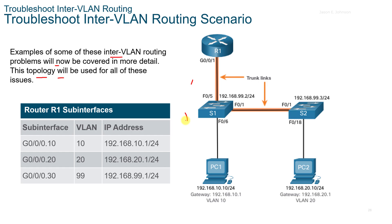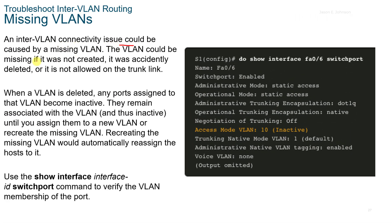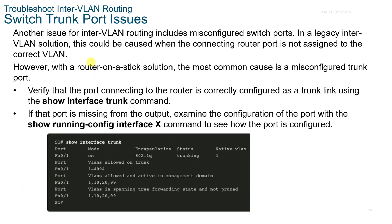An inter-VLAN connectivity issue could be caused by a missing VLAN. The VLAN could be missing if it was not created properly, was accidentally deleted, or is not allowed on the trunk line. When a VLAN is deleted, any ports assigned to that VLAN become inactive and remain associated with the VLAN until assigned to a new VLAN or the missing VLAN is recreated. Recreating the missing VLAN would automatically reassign the hosts to it. Use the show interface switchport command to verify VLAN membership of the port.